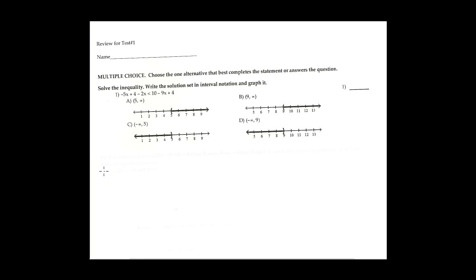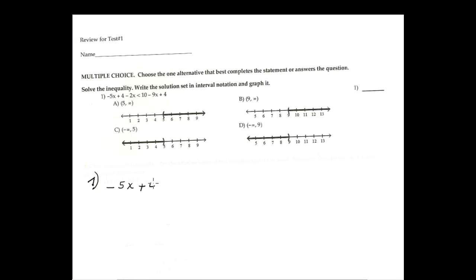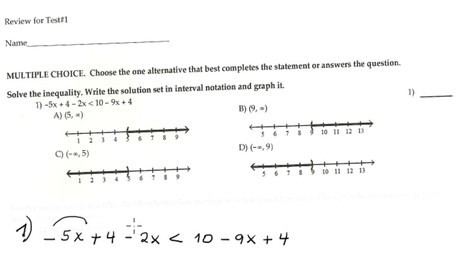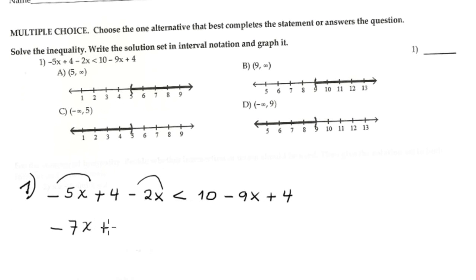Number one: the question is -5x + 4 - 2x < 10 - 9x + 4. Combining like terms on the left side: -5x and -2x gives -7x + 4. On the right-hand side, 10 and 4 gives 14 minus 9x.